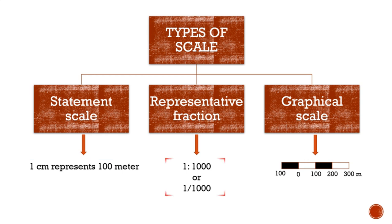The second method is representative fraction. Here the scale is given in the form of a ratio or fraction — for example, 1:1000 — meaning one unit on the map represents one thousand of the same units on the ground. These units may be any measure, centimeters or inches, so everyone in the world can use it regardless of language or units of measurement in their country.